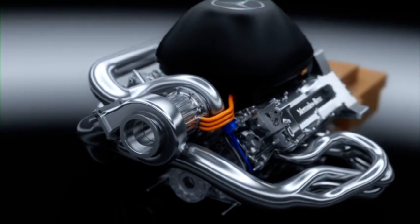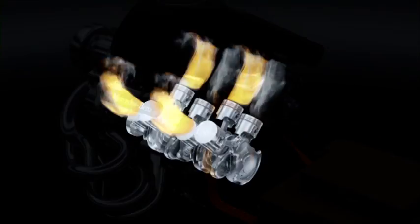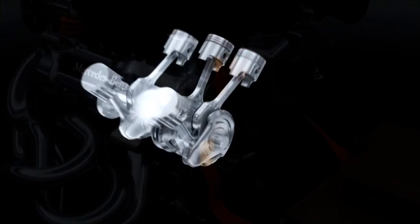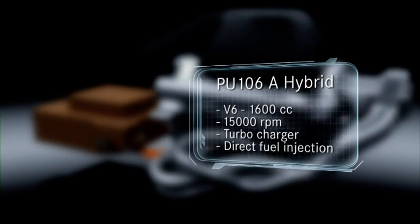The new engine regulations require downsizing from a 2.4-litre V8 to a 1.6-litre V6. Maximum revs have dropped from 18,000 rpm to 15,000.